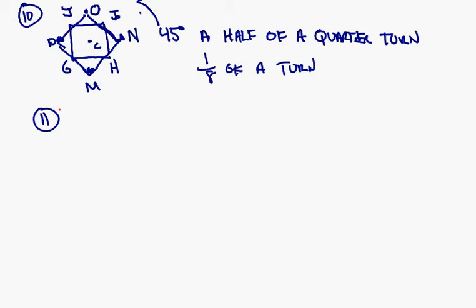Number 11, determine if each figure has rotational symmetry. If it does, give the number of degrees of all clockwise rotations less than 360 that map the figure onto itself. So imagine if you would, if we have a shape that looks like this. We have a shape that looks like this.